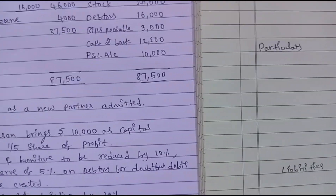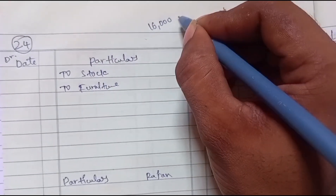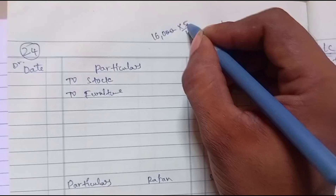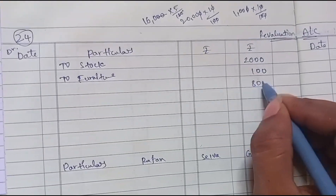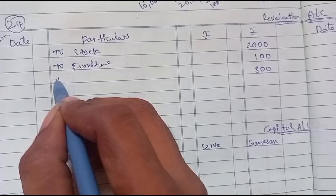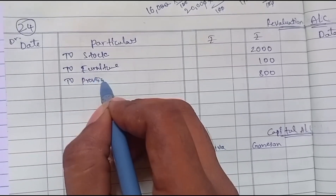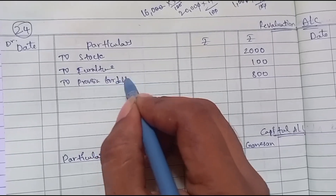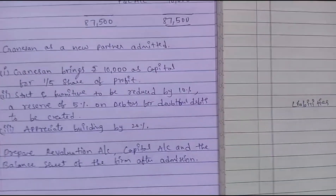Next, there is a 5% provision on debtors. Debtors are 16,000, so 16,000 into 5 by 100 equals 800. This is a decrease, so we enter: To Provision for Doubtful Debts 800.